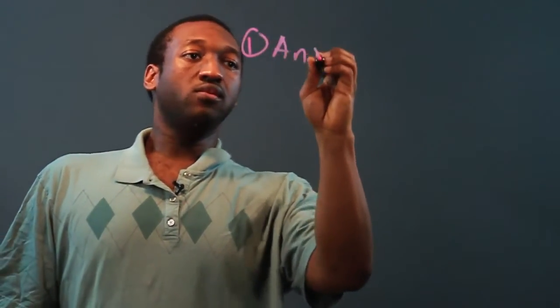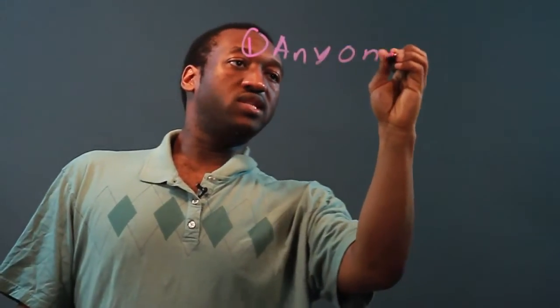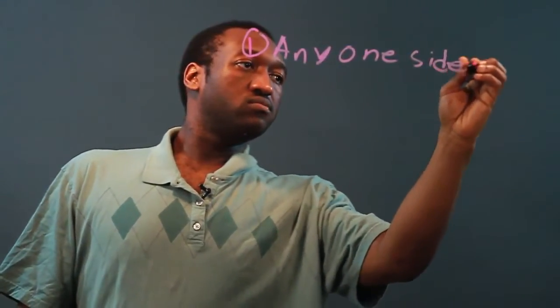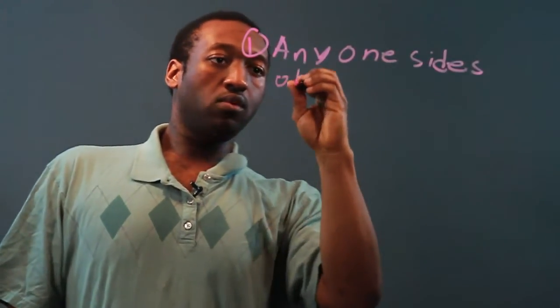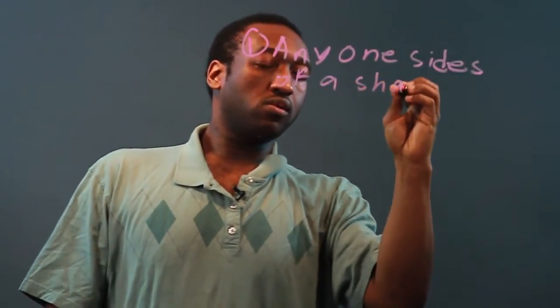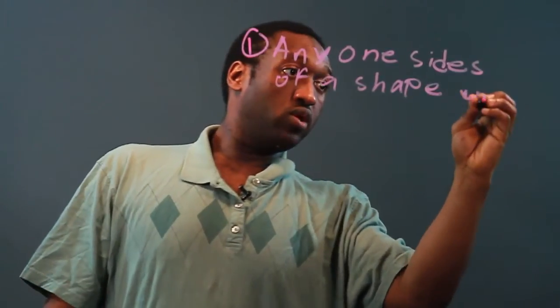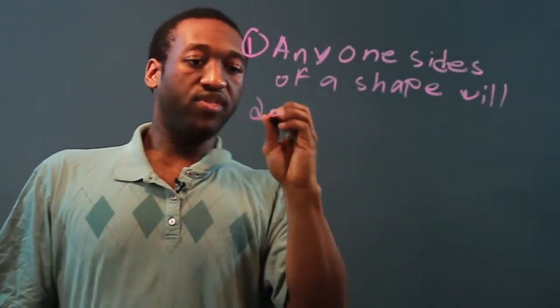Now the basic relationship is that any one side change of a shape will determine both area and perimeter.